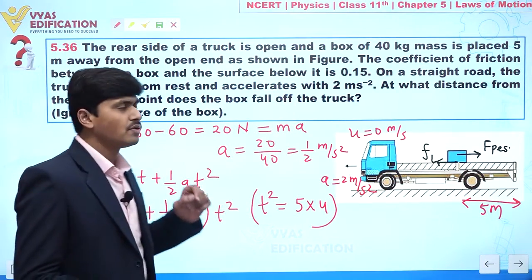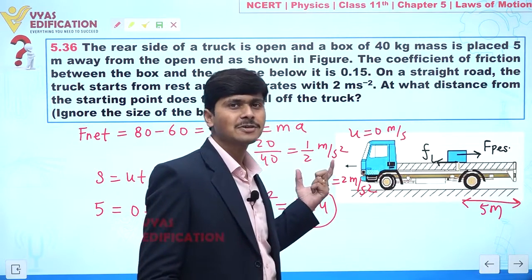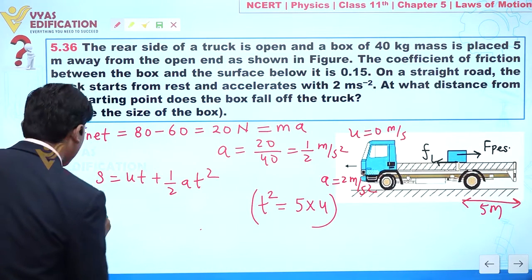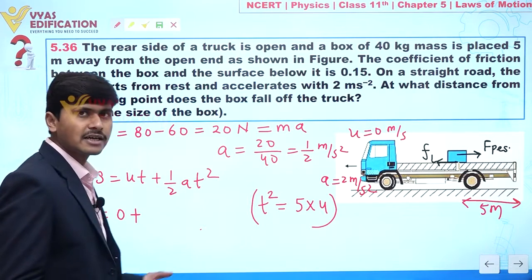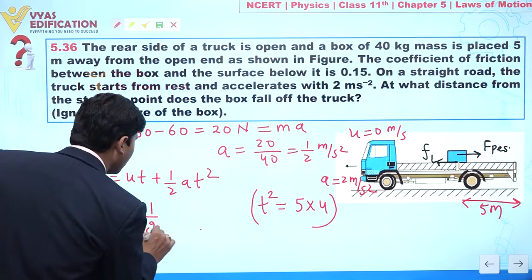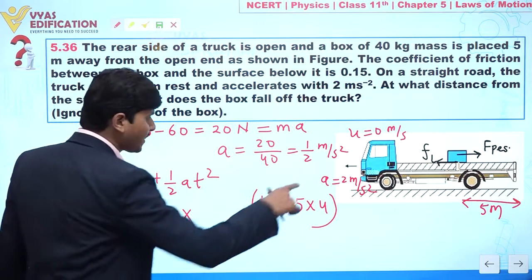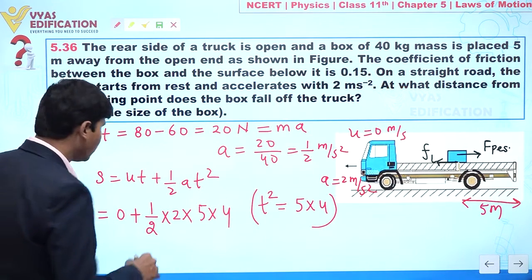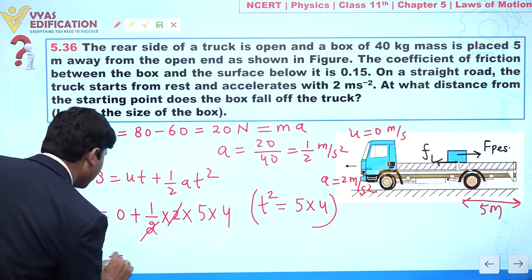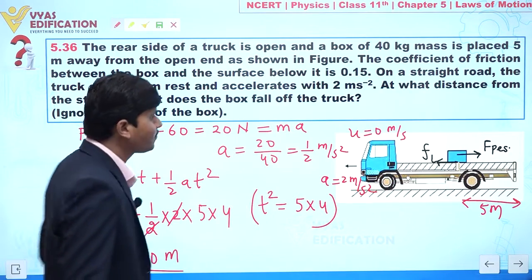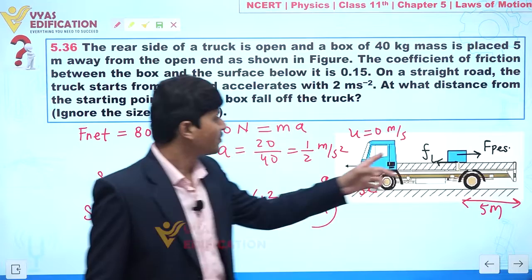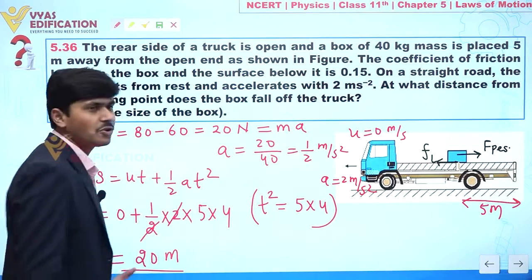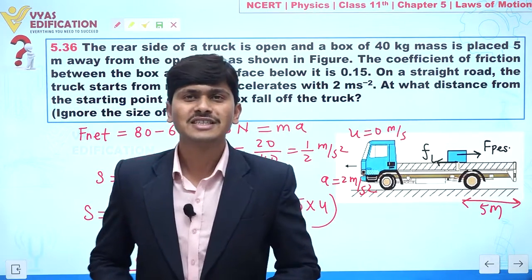Now we calculate the total distance covered by the truck. Applying s = ut + ½at²: initial velocity is 0, acceleration of the truck is 2 m/s², and t² = 20. So s = ½ × 2 × 20 = 20 meters. The total distance covered by the truck before the box falls off is 20 meters.